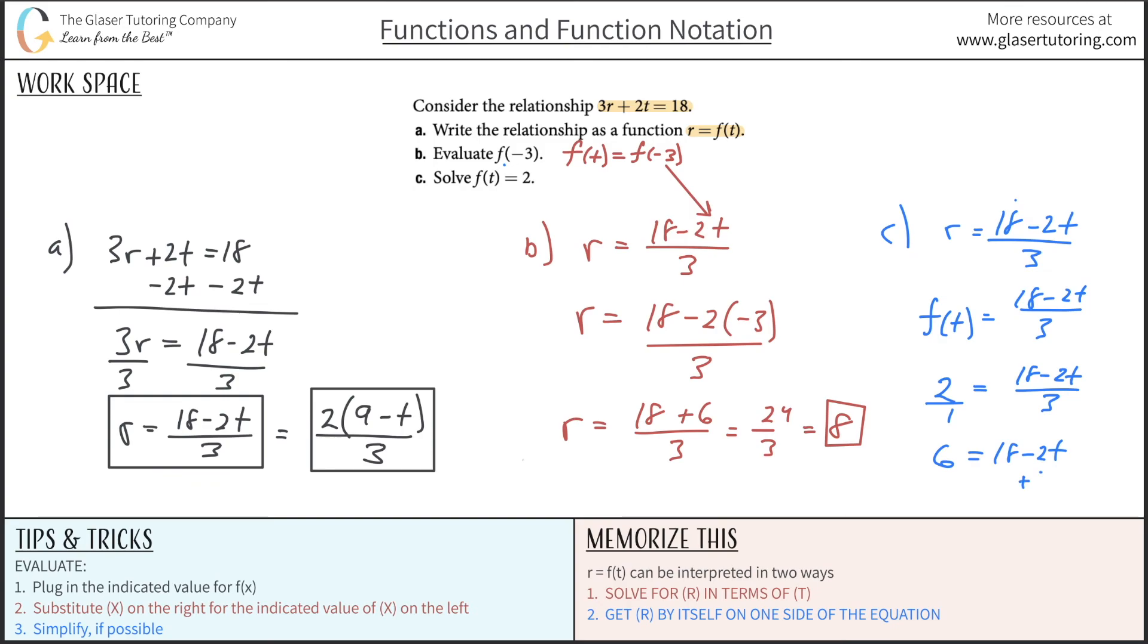Solve this for t by bringing the 2t over to the left-hand side. Subtract out the 6 from the left-hand side over to the right. And we get 2t is now equal to 12. So divide out the 2, and t is equal to 6. So there you go.